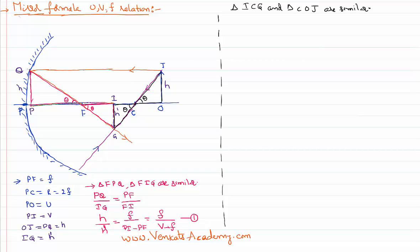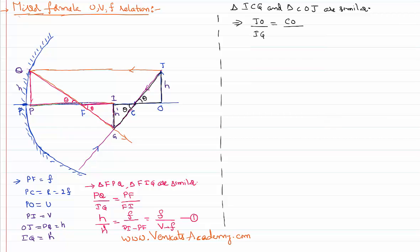As these two triangles are similar, I can again say the ratios of the sides are equal. So I can write: JO by IG equals CO by CI. JO is equal to h, IG is equal to h-dash, equal to CO by CI. I can write CO as PO minus PC.